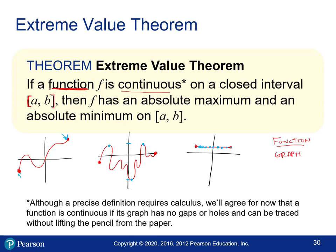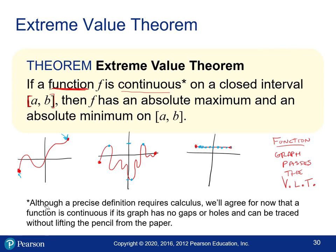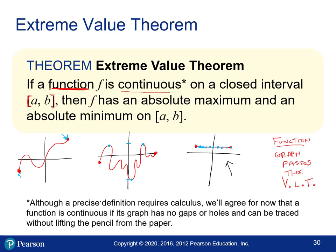If something doesn't pass the vertical line test, it's not a function, and the Extreme Value Theorem wouldn't apply. The theorem only works for functions. As long as the function is continuous on a closed interval, it will always have an absolute max and min — even in the constant case where every point is the max and the min.